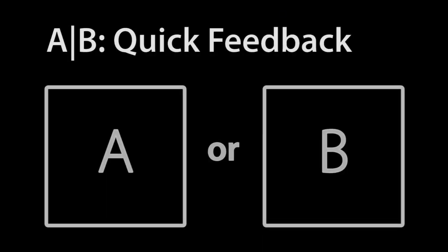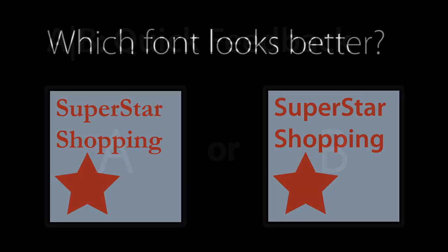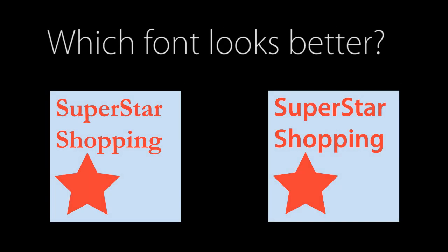We can use these real-time techniques for other applications as well. ABE is a quick feedback platform for snap decisions — give it 2 options and get 5 votes within about 5 seconds.